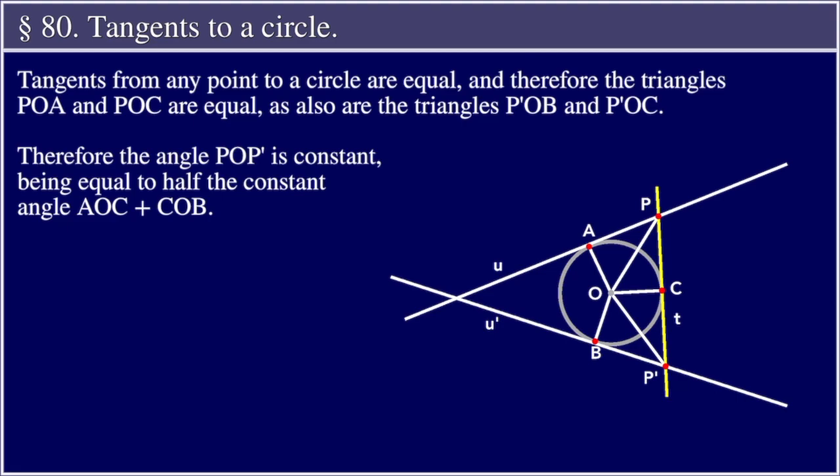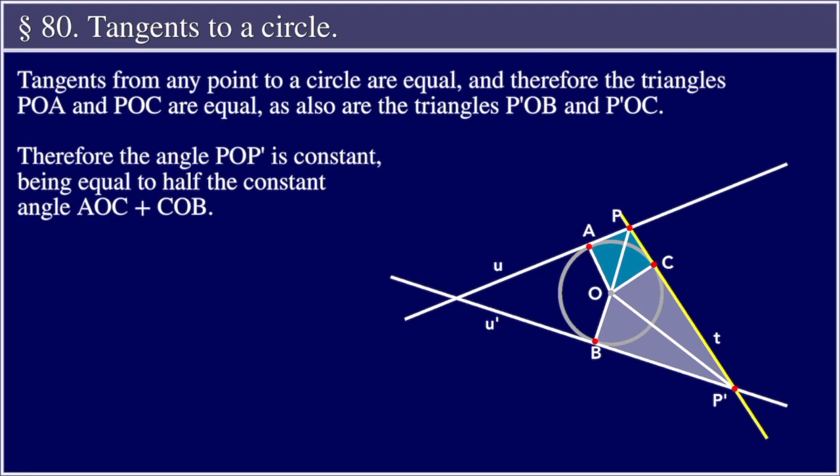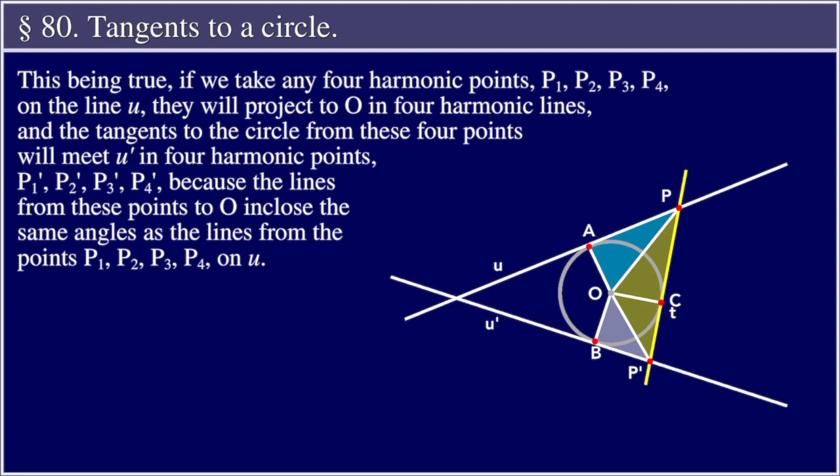Tangents from any point to a circle are equal, and therefore the triangles P,A,O and P,O,C are equal, as also are the triangles P',O,B and P',O,C. Therefore, the angle P,O,P' is constant, being equal to half the constant angle A,O,C plus C,O,B.